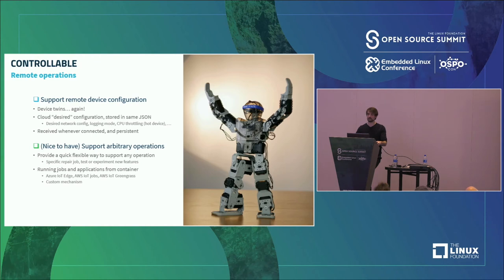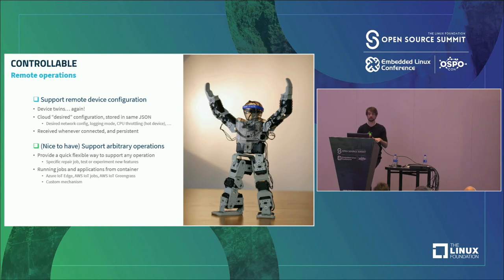Then there's remote device configuration. Device twins are back here, but in a different way. You can use the device twin to have the cloud configure things on your device — the desired network configuration, logging mode, whether you want to throttle the CPU. Because it's synchronized and always available on both sides, you can use it to reconfigure your device locally in a very reliable way.